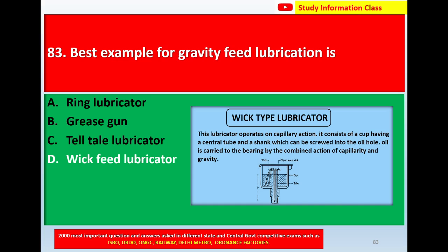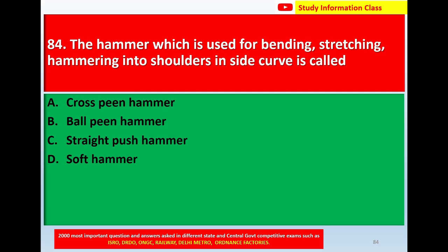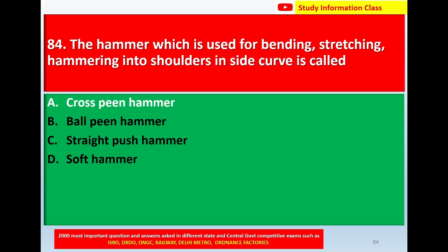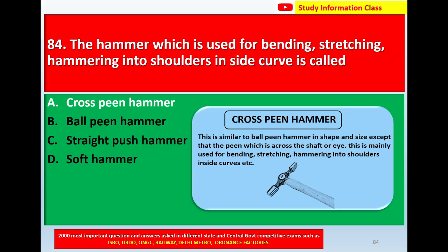Question number 84: The hammer which is used for bending, stretching, and hammering into the shoulder inside a curve is called — option A: cross pin hammer, option B: ball pin hammer, option C: straight peen hammer, option D: soft hammer. Correct answer is option A: cross pin hammer.